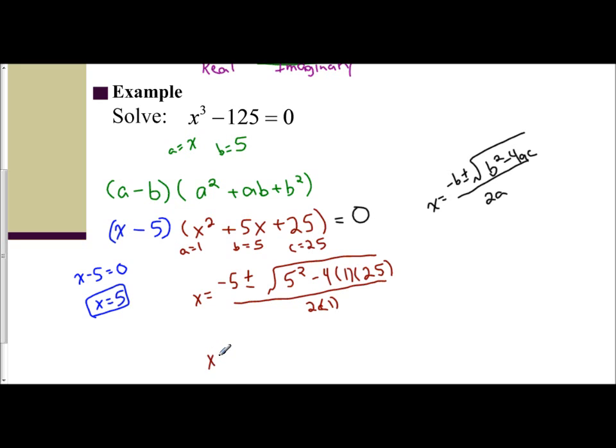And so x equals negative 5 plus or minus. Let's do this all to the side. We're going to have 5 squared is 25, 4 times 1 times 25 is 100. So the square root of 25 minus 100 is the square root of negative 75. And 2 times 1 is 2.